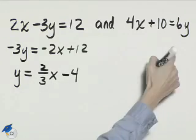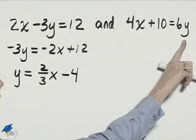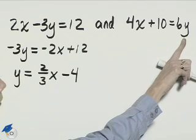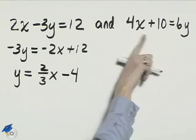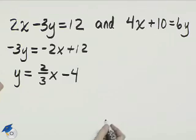For the other equation, we'll do the same thing. y is already by itself over here with the 6 times y, so if we just divide everything by 6, we'll have this in y equals mx plus b form.